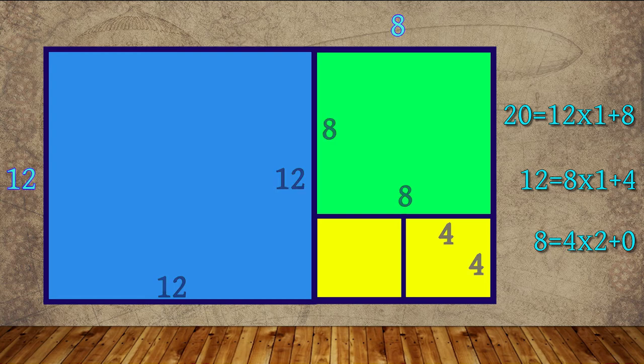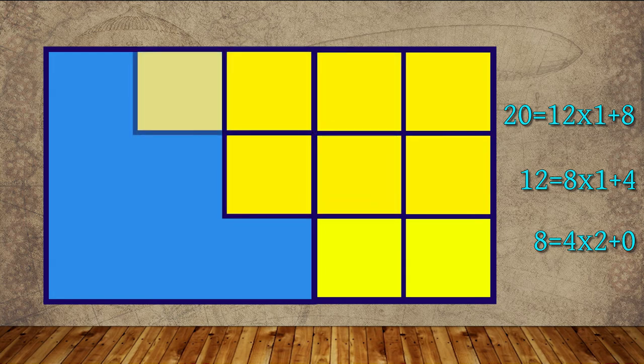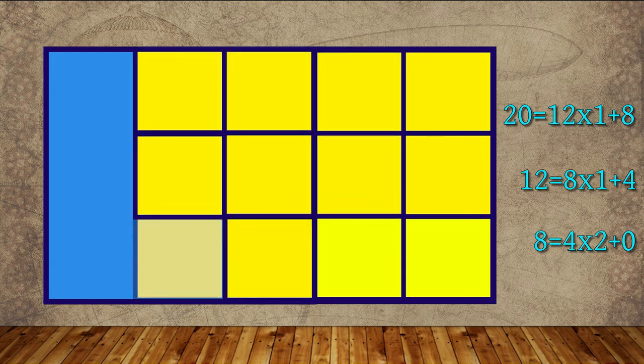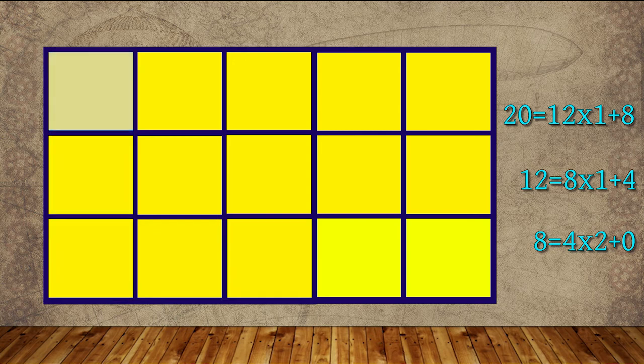We have seen the remainder is 0, that means the complete wall is covered by equal square tiles of size 4 by 4. Thus by using Euclid's Division Lemma, we can find HCF.